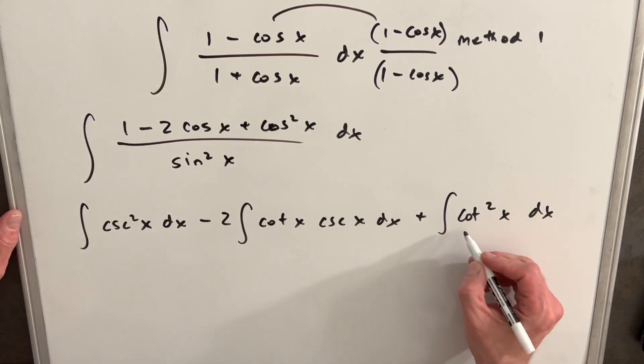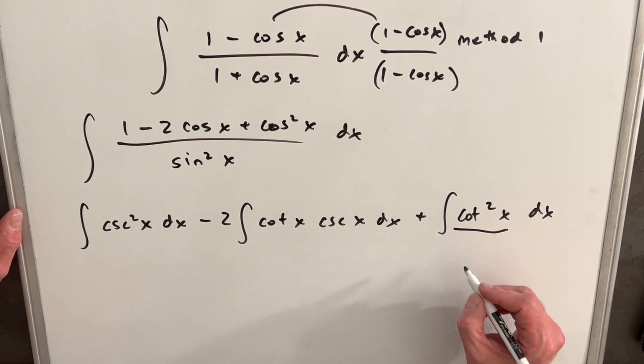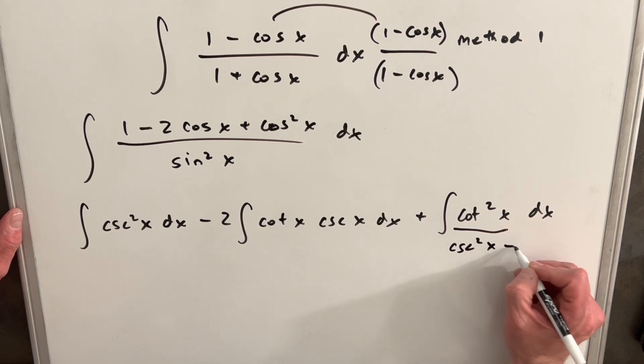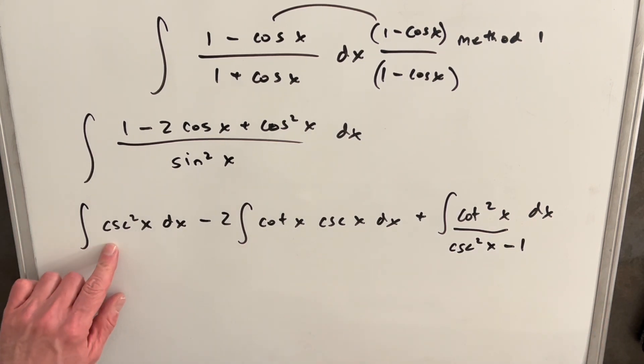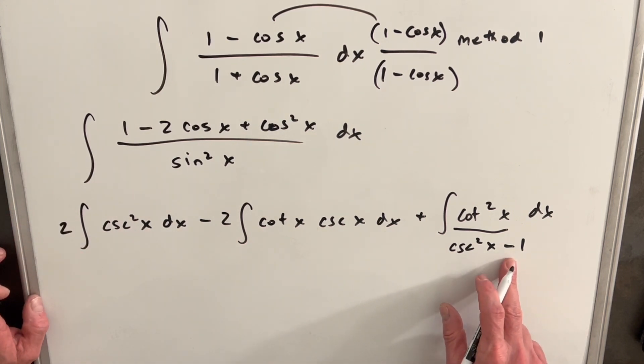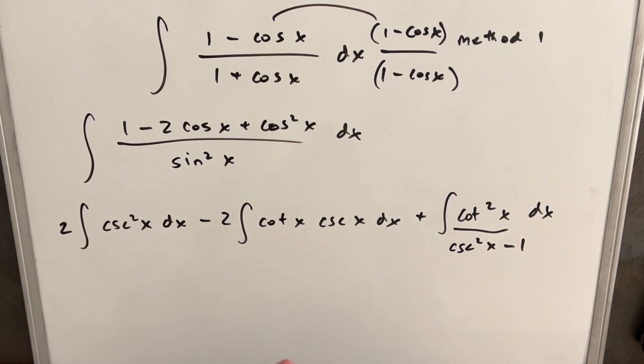Then I'm going to use one identity before I integrate. Cotangent squared x is the same thing as cosecant squared x minus 1. Well, we already have a csc² x here, and so if we separate this out, we can add this integral of csc² x with this one, and we'll have a 2 out front. And then here, we're just subtracting a 1, so we're just going to have the integral of 1 at the end. Now I think we have three integrals that we know how to do.